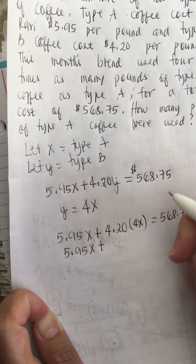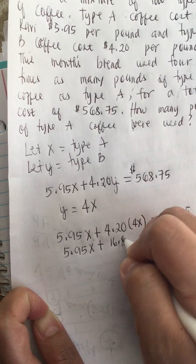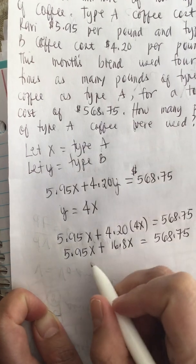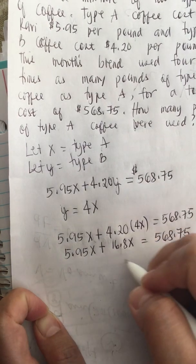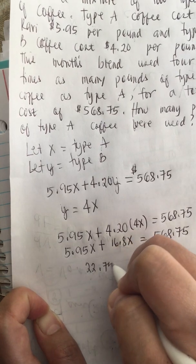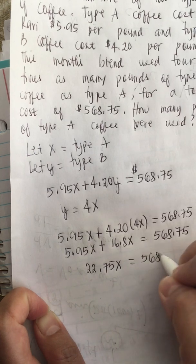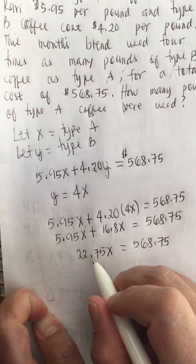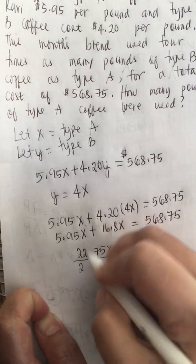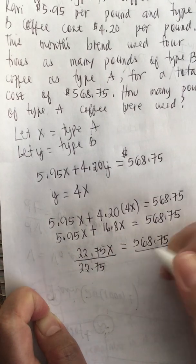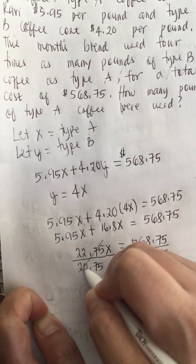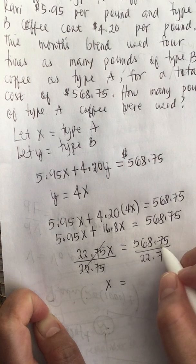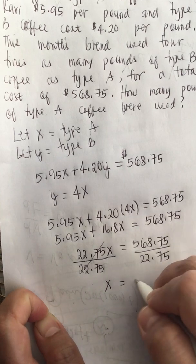We multiply and combine: 4.20 times 4x equals 16.8x, so we have 5.95x plus 16.8x equals 568.75. Combining like terms, 5.95 plus 16.8 equals 22.75, so 22.75x equals 568.75. Dividing both sides by 22.75, we get x equals 568.75 divided by 22.75, which equals 25 pounds.